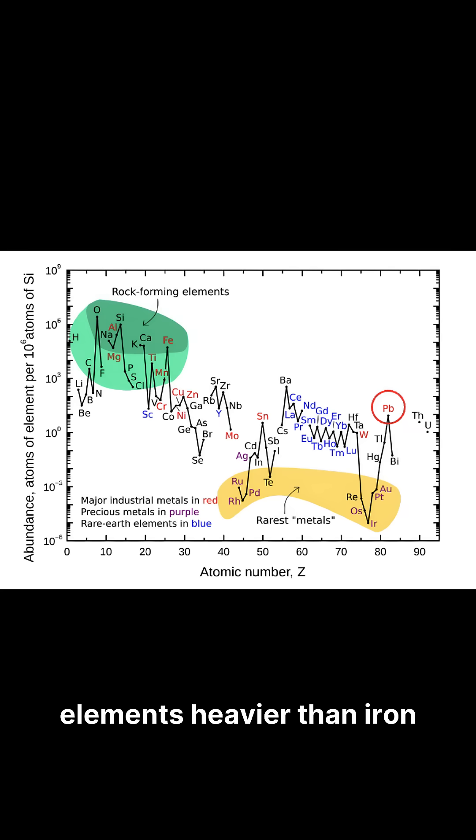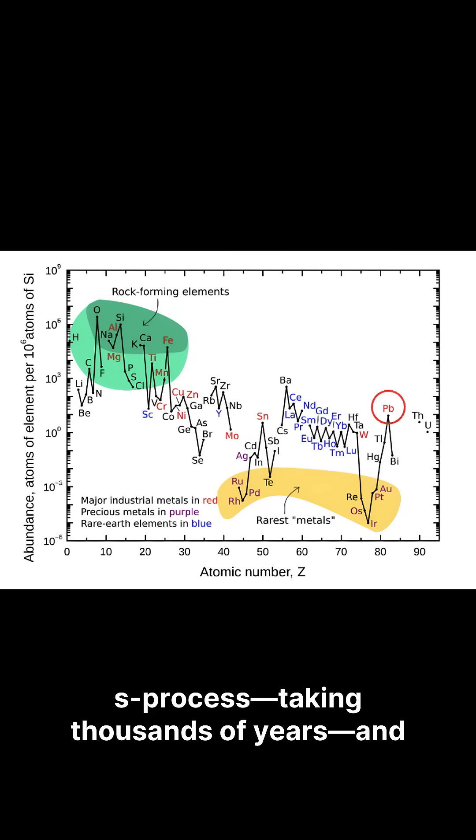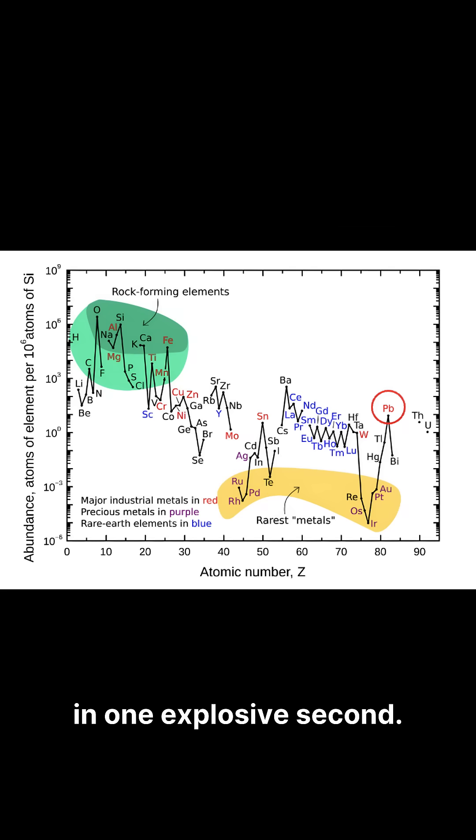Over 99% of elements heavier than iron are born through neutron capture. Scientists knew the slow S process, taking thousands of years, and the rapid R process, happening in one explosive second.